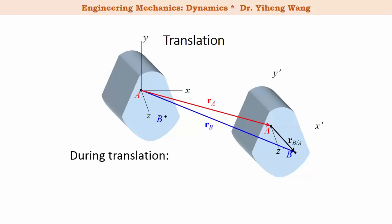During translation this relative position vector remains the same, its time derivative is zero, which means that the position of point B is always the same relative to point A.